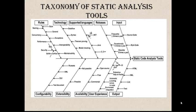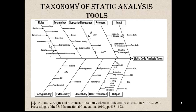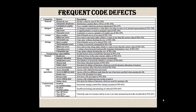technology used, supported programming languages, releases per year, configurability, extensibility, availability, user friendliness, the set of rules that are supported by the tool, etc. Now let us look at the kind of defects that static analysis tools identify. The following table enumerates 30 different code defects selected from the common weaknesses enumeration catalog and C secure coding standards.